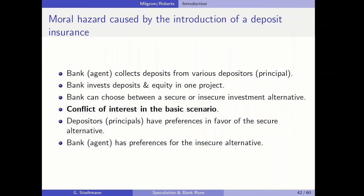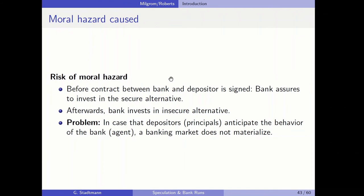This conflict of interest might result in moral hazard. Before the contract between the bank and the depositor is signed, the bank assures that it will invest in the secure alternative. The bank promises and advertises that it is a secure bank and only invests in secure alternatives. After the bank has collected the liquidity, the bank will depart from its promise and invest in the insecure alternative. The problem is that if depositors can anticipate this behavior, a banking market will not materialize.